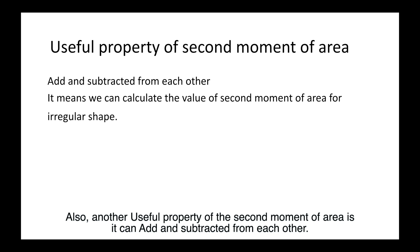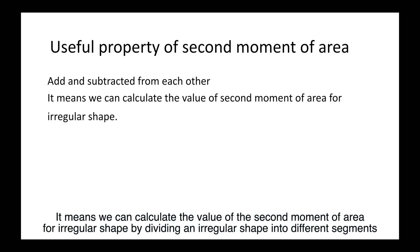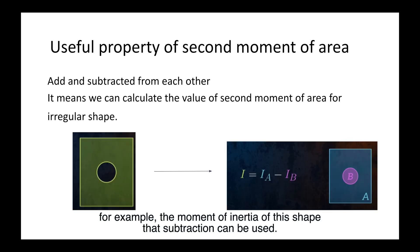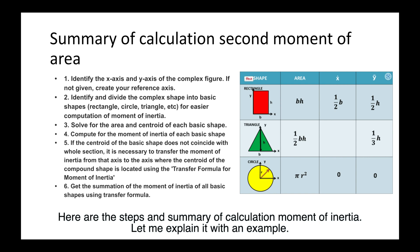Another useful property of the second moment of area is that values can be added and subtracted from each other. This means we can calculate the second moment of area for an irregular shape by dividing it into different segments. For example, the moment of inertia of a hollow shape can be found using subtraction. Here are the steps and summary for calculating moment of inertia.